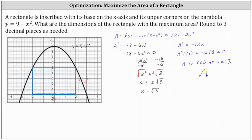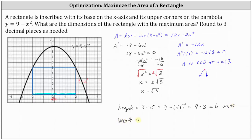Now let's find the dimensions of the rectangle with the maximum area. The height equals 9 minus x squared, which gives us 9 minus the square of square root of 3, equaling 9 minus 3, which is 6 units. The width is equal to 2x, which is 2 square root of 3 units.